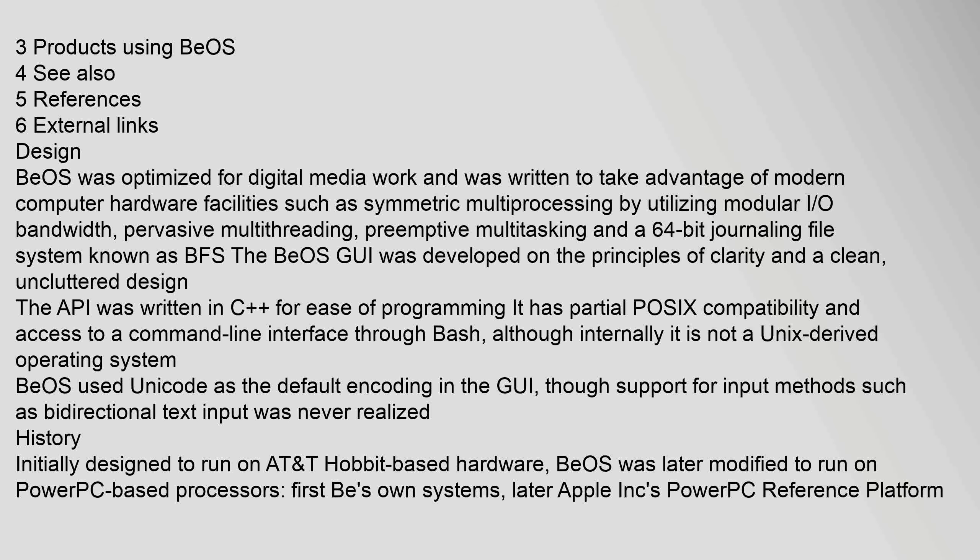BeOS was optimized for digital media work and was written to take advantage of modern computer hardware facilities such as symmetric multiprocessing by utilizing modular I/O bandwidth, pervasive multithreading, preemptive multitasking, and a 64-bit journaling file system known as BFS. The BeOS GUI was developed on the principles of clarity and a clean, uncluttered design. The API was written in C for ease of programming. It has partial POSIX compatibility and access to a command line interface through bash. Although internally it is not a Unix-derived operating system, BeOS used Unicode as the default encoding in the GUI, though support for input methods such as bidirectional text input was never realized.